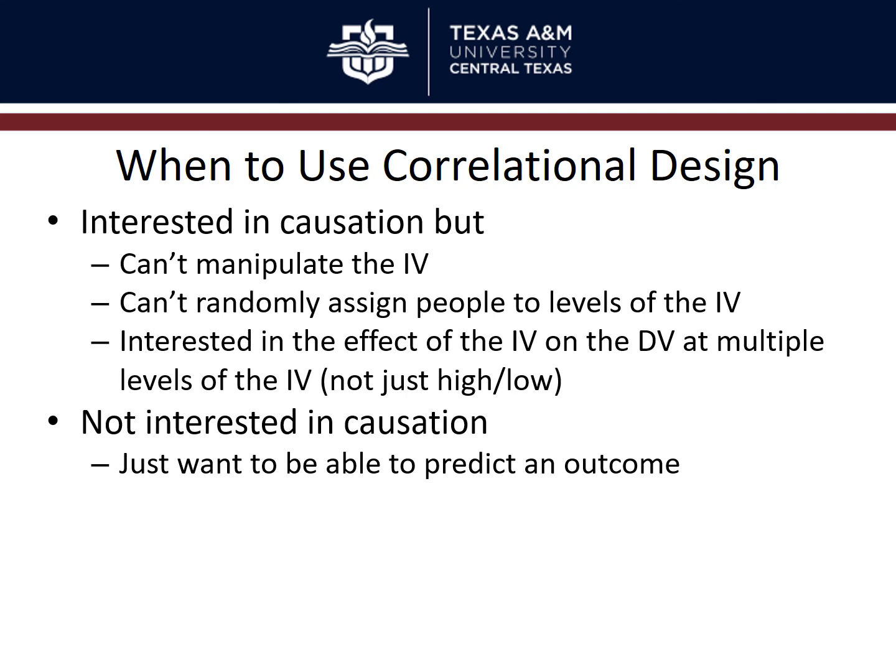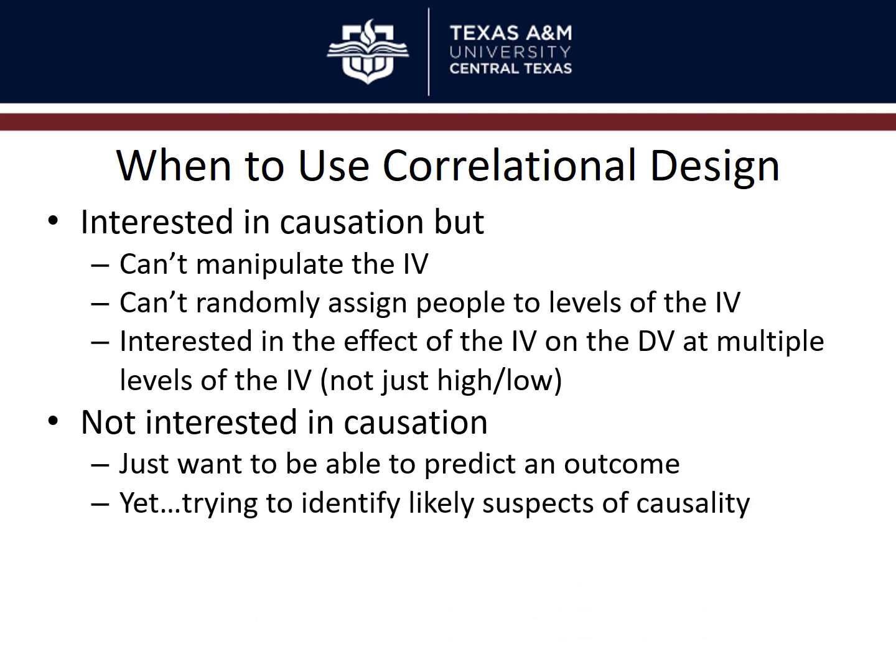More often, you're not at the causation stage yet — you want to identify likely suspects first. With correlational research, you can measure many variables simultaneously with fewer subjects and less expense to identify which ones are good predictors. If there's a causal relationship, there should be a correlation — correlation doesn't mean causation, but causation usually produces a correlation. You might also use correlational research to identify possible mediation or moderation effects before designing an experiment.